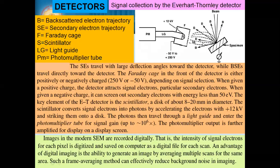Looking at the detector in detail: when the beam strikes, B stands for backscattered electron, the low-angle signal is your secondary electron, and the high angle with high energy is the backscattered electron, while the low angle and low energy gives secondary electrons. F is the Faraday cage, AC is the scintillator, LG is the light guide, and then there is a photomultiplier tube. When the signal is captured, it goes to the system to get the proper information. Images in the modern SEM are recorded digitally.